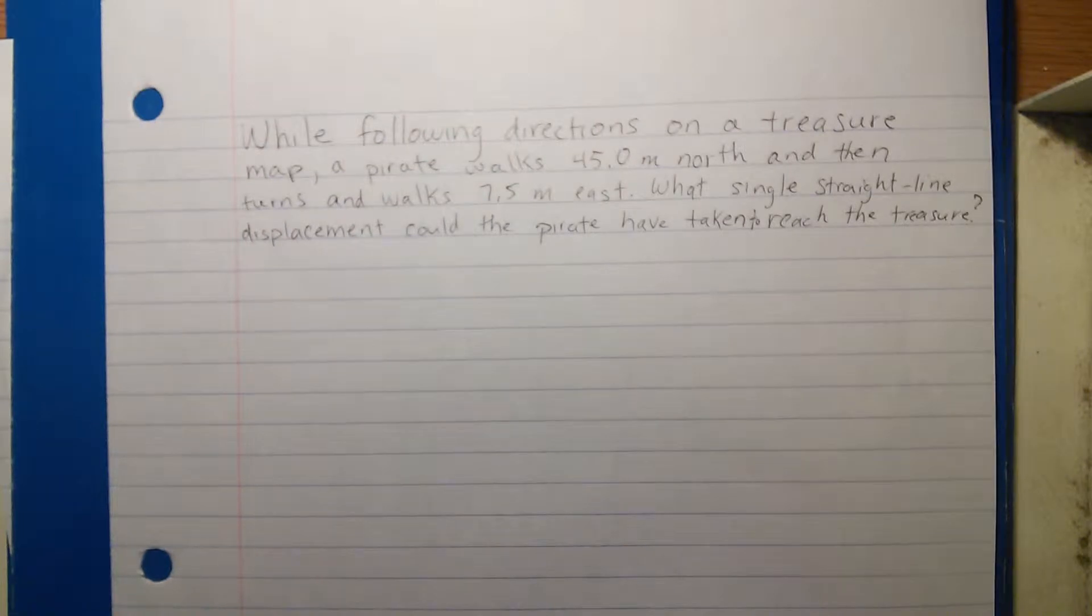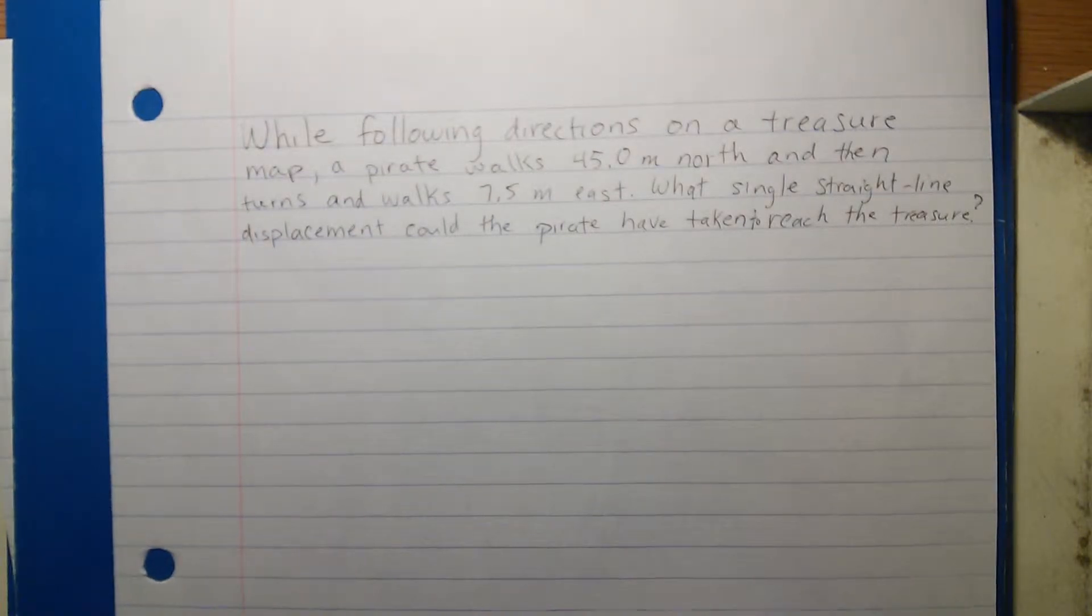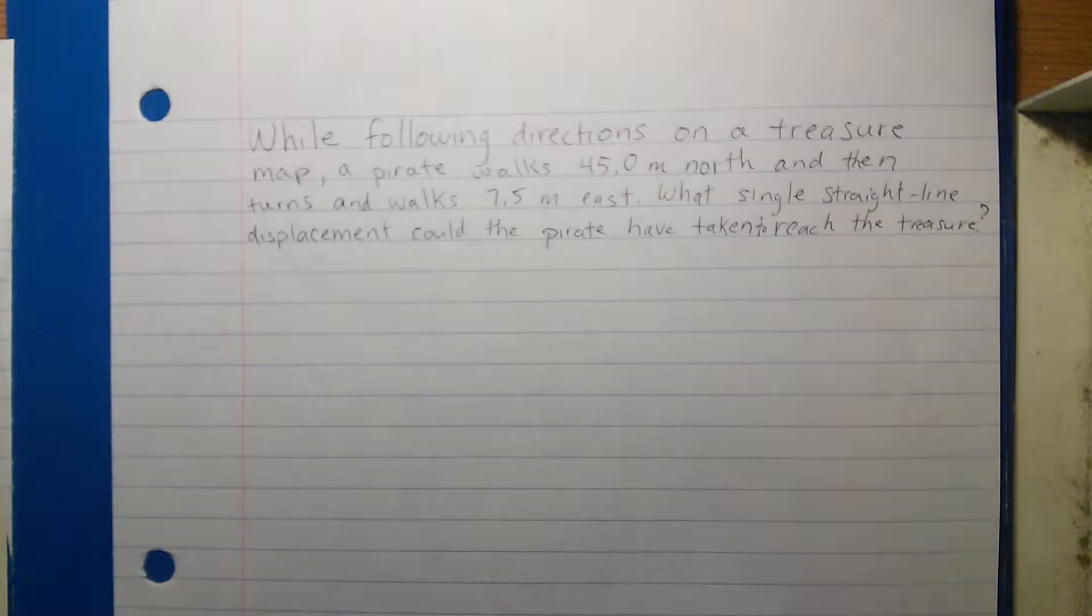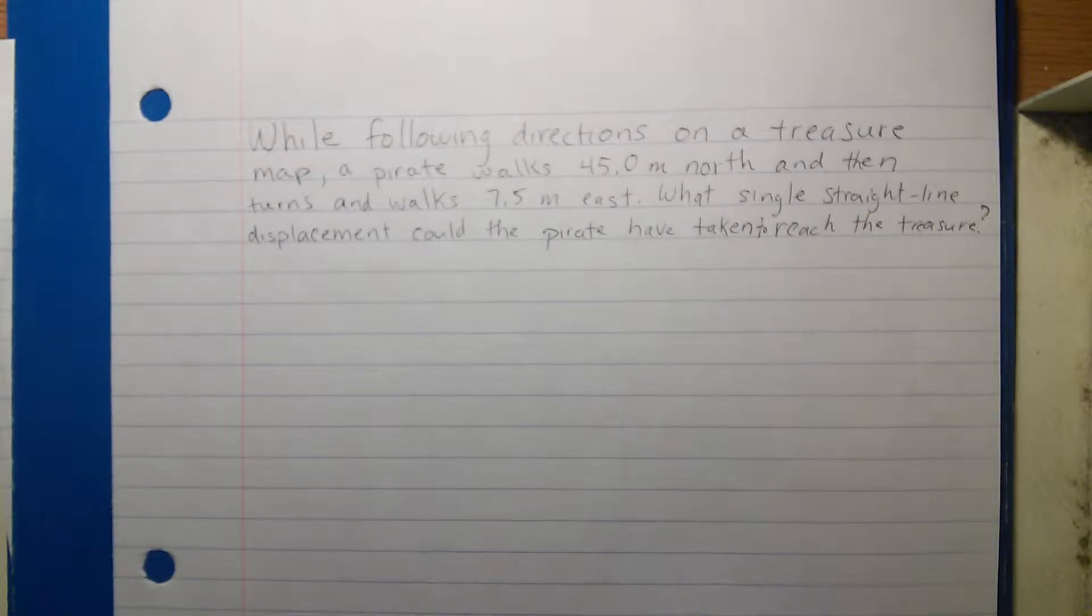Here's a fun problem involving pirates. While following directions on a treasure map, a pirate walks 45 meters north and then turns and walks 7.5 meters east. What single straight line displacement could the pirate have taken to reach the treasure? I'd like you to always start by drawing these out, and you may want to pause the video at this point so you can try it on your own.